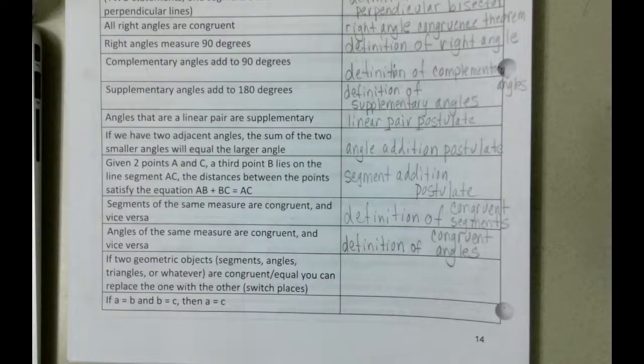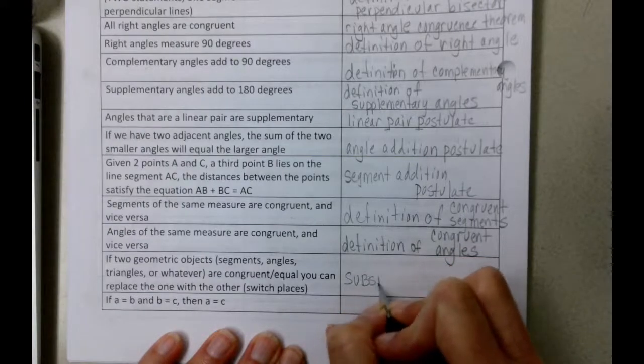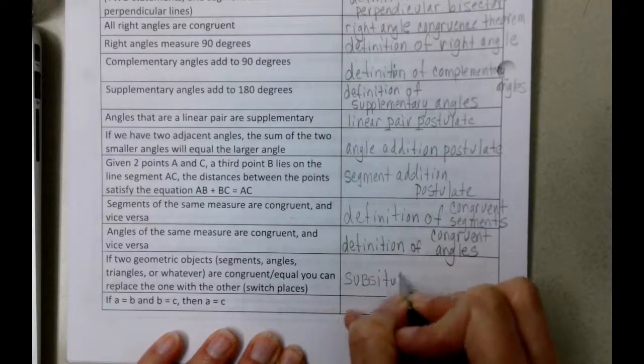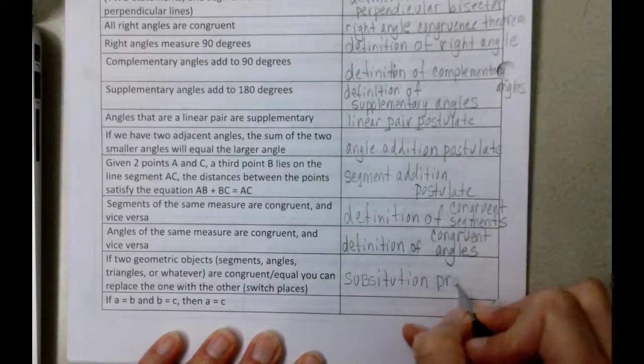If two geometric objects, segments, angles, triangles, or whatever are congruent slash equal, you can replace the one with the other. Well that is the substitution property. In fact, it's substitution property. Let's say that a little bit better.